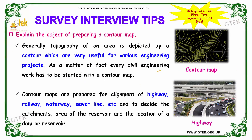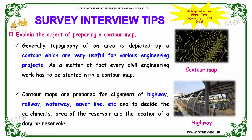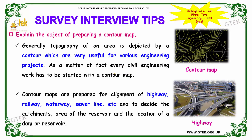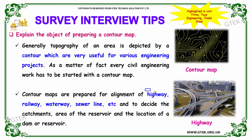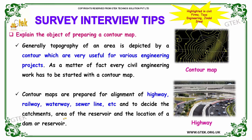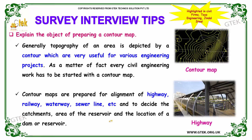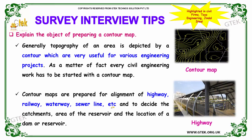Our next question asks: explain the object of preparing a contour map. Generally, the topography of an area is depicted by contours, which are very useful in various engineering projects. Every civil engineering work has to be started with a contour map. Contour maps are prepared for the alignment of highway, railway, waterway, sewer line, etc., and to decide the catchment area of a reservoir and the location of a dam or reservoir.